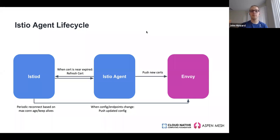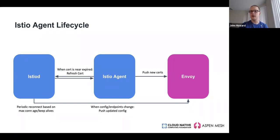Throughout the lifecycle, the Istio agent continues two main functions: monitoring certificates and requesting new ones from Istiod before expiration, and receiving pushed configuration and endpoint updates from Istiod. There are also connection-level parameters — max connection age and keep-alives — on the gRPC connection between Istiod and Envoy. Disconnects every 30 minutes or 5 minutes with no traffic are standard behavior due to these defaults, so don't be alarmed at periodic disconnects unless they are happening every few seconds.